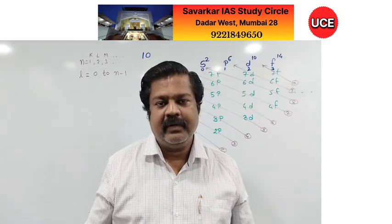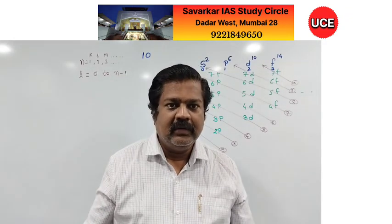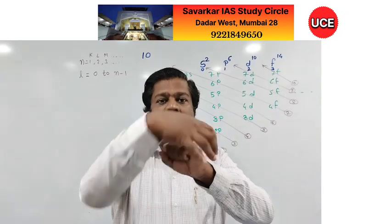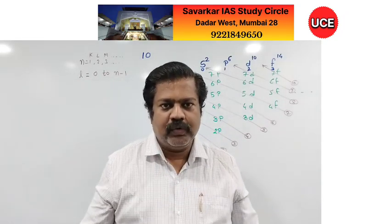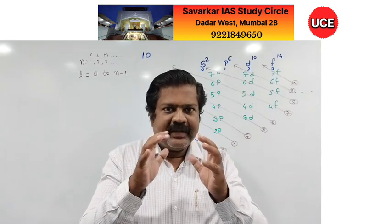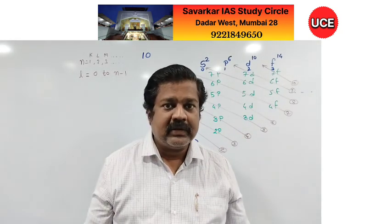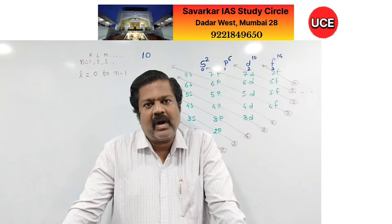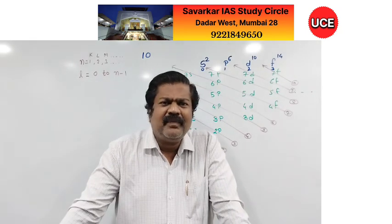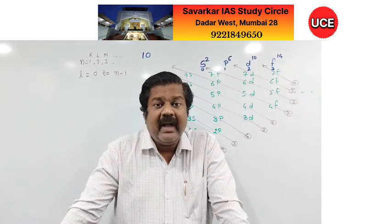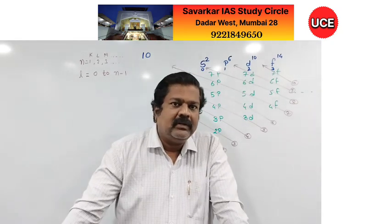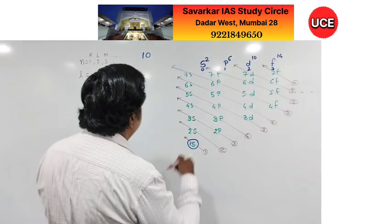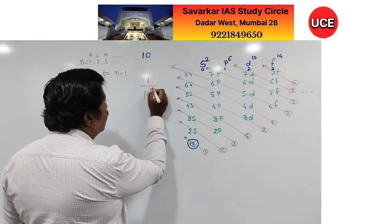According to Niels Bohr's model, the nucleus is at the center and electrons form a cloud around it, distributed equally. The diameter of an atom is on the order of angstroms — 1 angstrom = 10⁻¹⁰ meters — so the available space is extremely tiny.